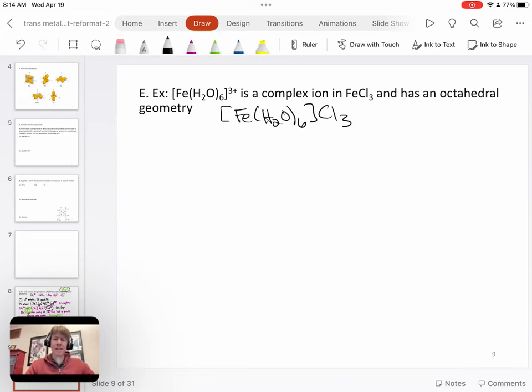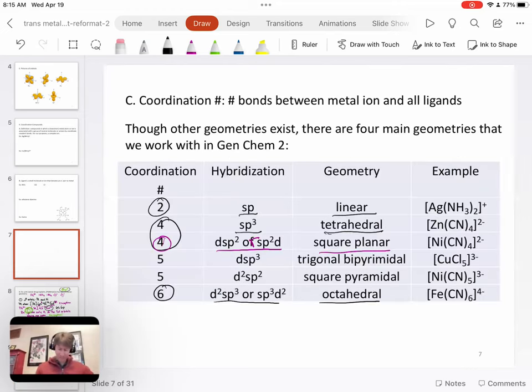The iron-3 ion does have an octahedral geometry. We know that it has an octahedral geometry because it has six ligands, and six ligands means it is octahedral. And on that previous slide, we can see that the only choice for six ligands is octahedral, and we even have an example there. It's a different example, but it does have the six ligands right there.